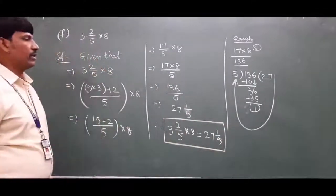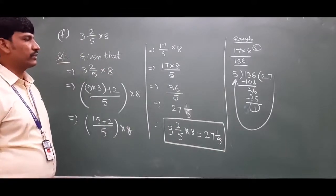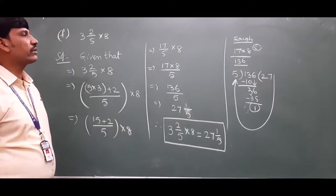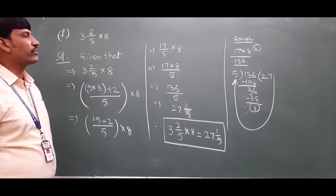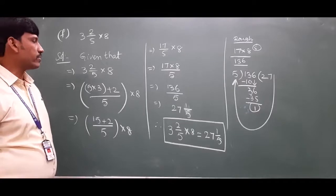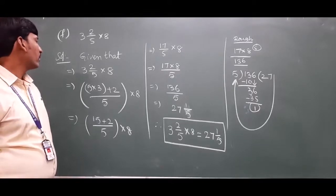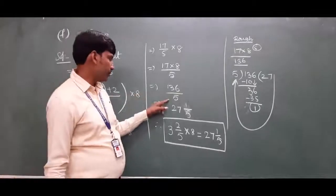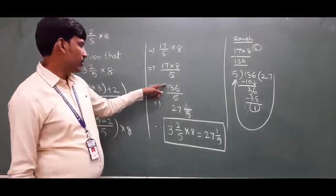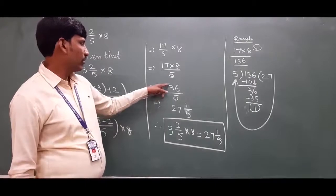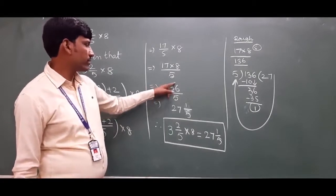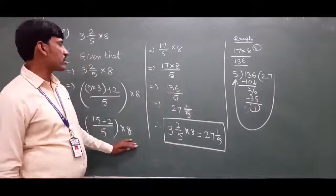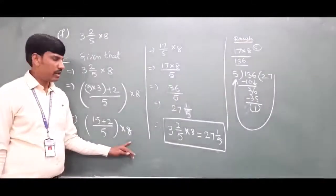So 3⅖ × 8 = 27⅕. Let me verify: 136 ÷ 5 — 5 × 2 = 10, 5 × 7 = 35, remainder 1 — yes, 27⅕ is correct.